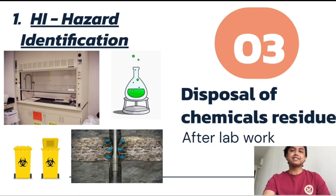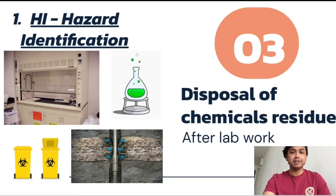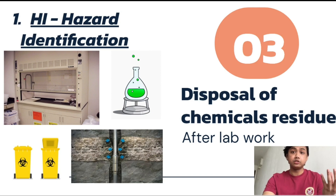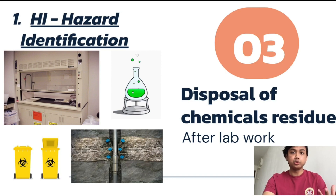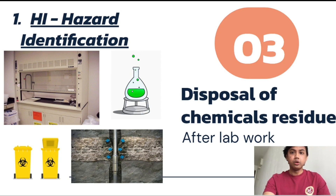The third hazard identification is disposal of chemical residue. Working in a lab, you'll be handling a lot of things that are too volatile. So when it's too volatile, it will spread in the surrounding room throughout the whole session, and you don't want that to occur.